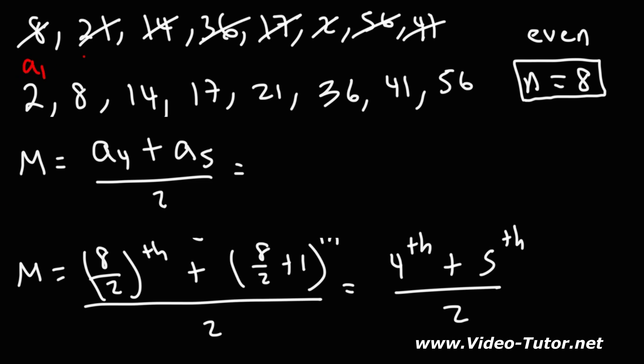So this is the first term. This is the second, third, and this is the fourth, and here is the fifth term. So the value of the fourth term is 17. The value of the fifth term is 21. So we're going to average those numbers. 17 plus 21 is 38, and 38 divided by 2 is 19. So that's going to be the value of the median for this set of numbers. So that's how you can calculate it using this formula.